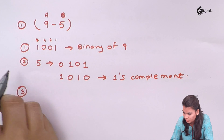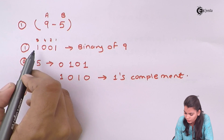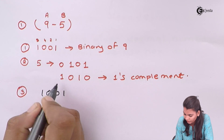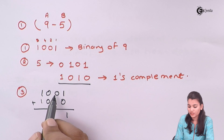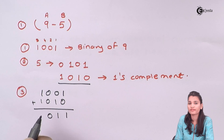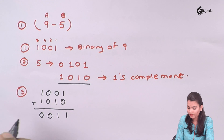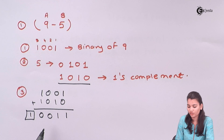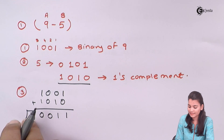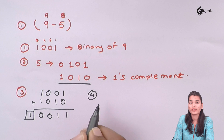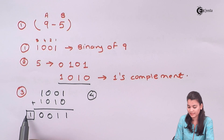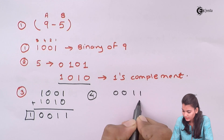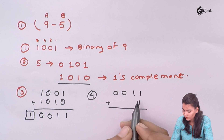Now step 3 is very important. We add step 1 and step 2. From step 1 we have 1, 0, 0, 1, and from step 2 we have the one's complement of 5. Performing the addition: 1 plus 0 gives 1; 0 plus 1 gives 1; 0 plus 0 gives 0; and 1 plus 1 gives 0 with a carry of 1. We have 4 digits in each number, but after addition we have 5 digits — so the carry is present. In step 4, since carry is present, we make the end-around carry: add this carry into the answer.